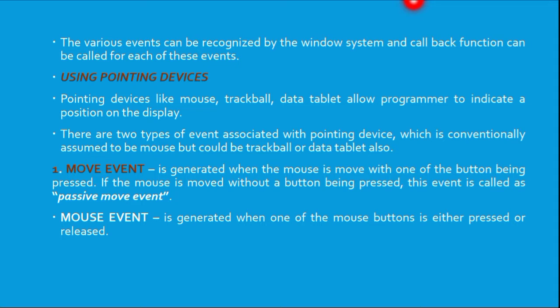There are different types of events — mouse event, keyboard event, and so on. If you use pointing devices like a mouse, trackball, or data tablet, they allow the programmer to indicate a position on the display. With respect to the mouse, there are two types of events. The first is a move event, generated when the mouse is moved with one of the buttons being pressed. If the mouse is moved without a button being pressed, this is called a passive move event.